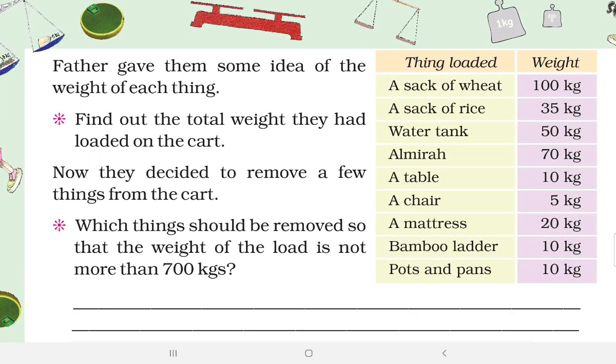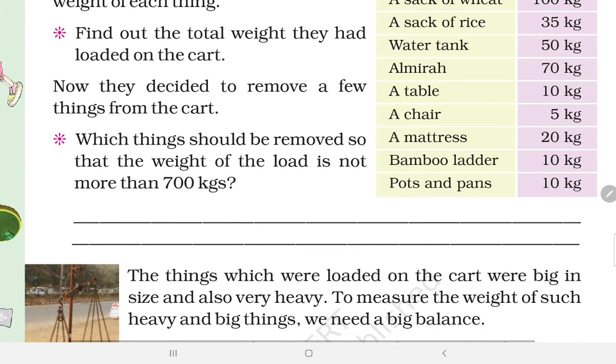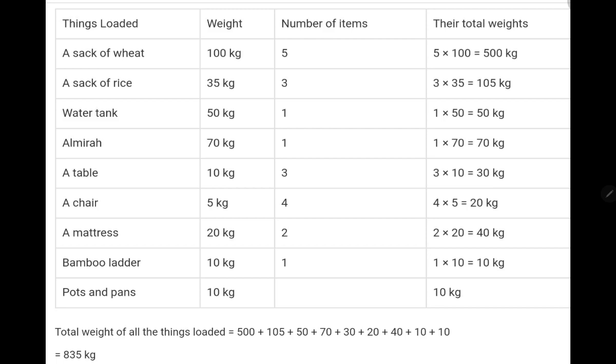Father gave them some idea of the weight of each thing. Find out the total weight they had loaded on the cart. Now, these are the weights here: the wheat sack is 100 kg, the rice is 35 kg, the water tank is 50 kg, the almira is 70 kg, the table is 10 kg.